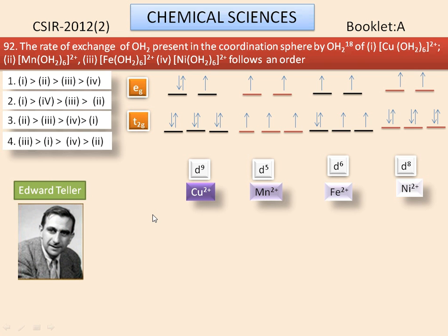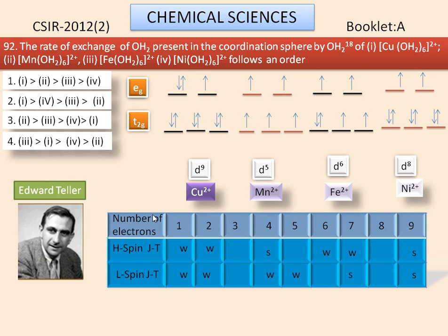This table summarizes the Jahn-Teller effect. For copper 2+ complex, T2G orbital is evenly occupied, but EG orbital is unevenly occupied. So it will have strong Jahn-Teller effect. That is, in this complex, axial bonds will be elongated more, so the rate of exchange will be easier.